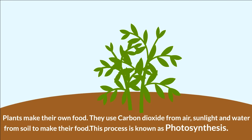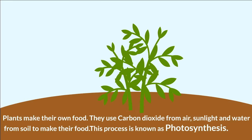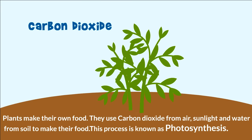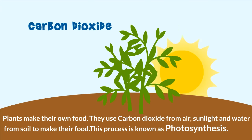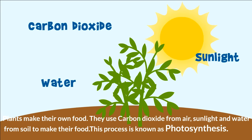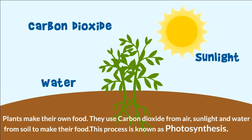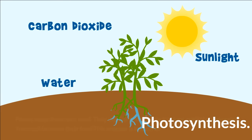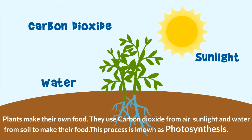Plants make their own food. They use carbon dioxide from air, sunlight, and water from soil to make their food. This process is known as photosynthesis.